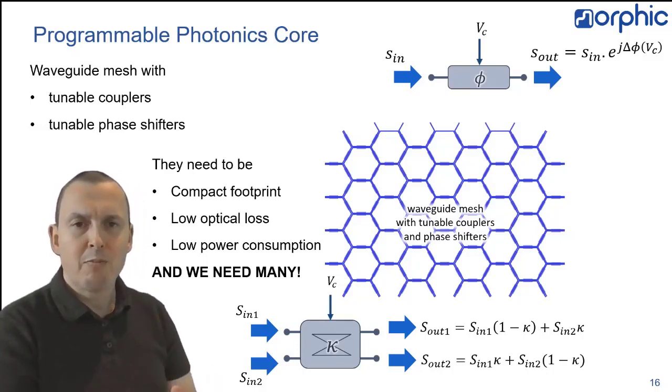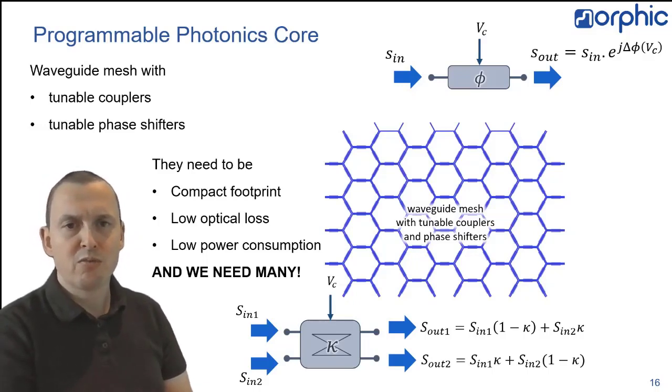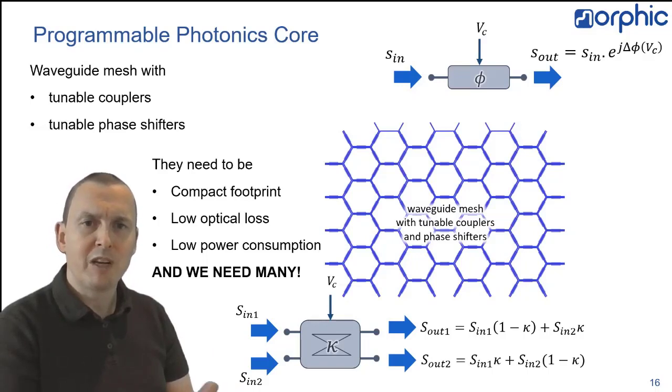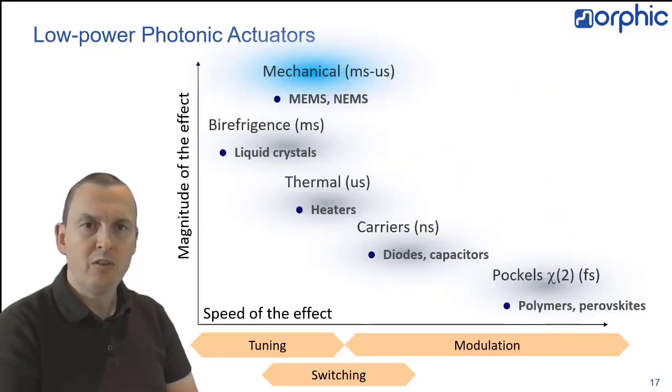Now, if we think about what the workhorse is today in silicon photonics in terms of low optical loss compact phase shifters, we end up with heaters. And that's not a very good proposition to scale up to thousands of heaters.